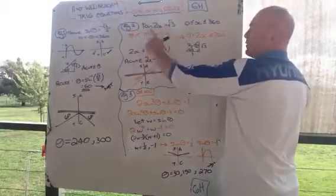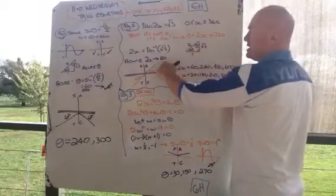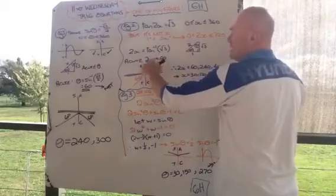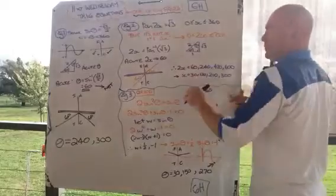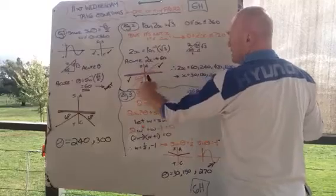2x shift tan of root 3, like we did over there, exact value triangle, gives me an answer of 60 again. But, it's not x equals 60, it's 2x equals 60. So, put my 60s in the correct quadrants, first and third, all in tan.